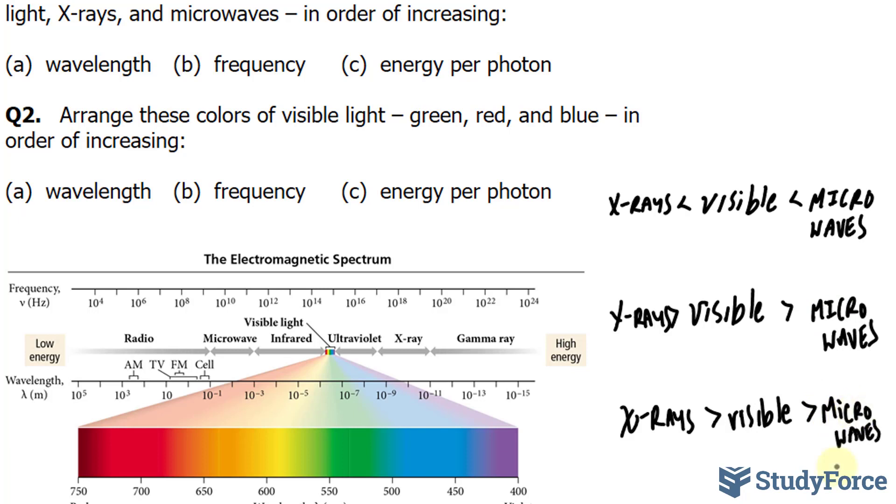That covers question one. Let's look at question two. Arrange these colors of visible light - green, red, and blue - in order of increasing wavelength, frequency, and energy per photon.